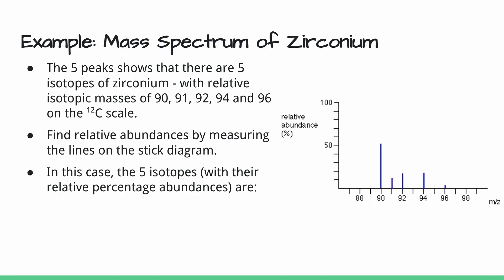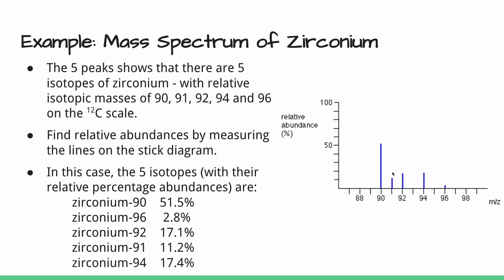The relative abundances for zirconium-90 is 51.5%, zirconium-96 (this tiny little peak) is only 2.8%, zirconium-92 is 17.1%, zirconium-91 is 11.2%, and zirconium-94 is 17.4%.